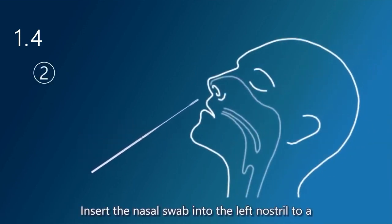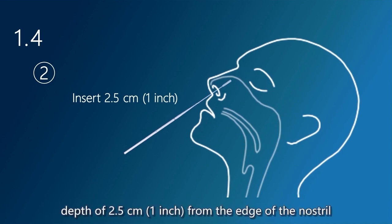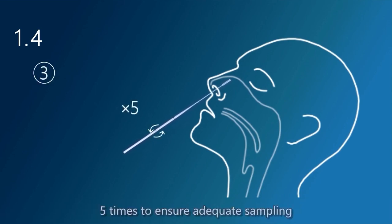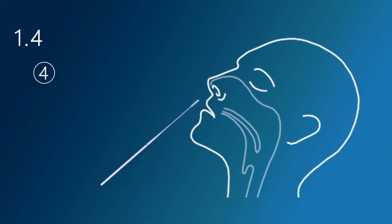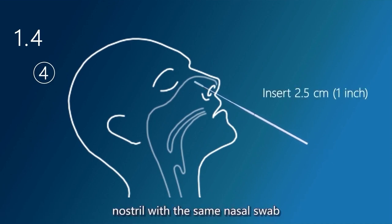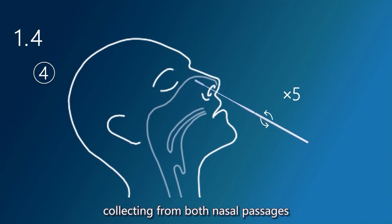Insert the nasal swab into the left nostril to a depth of 2.5 centimeters (one inch) from the edge of the nostril. Rotate the nasal swab on the nostril wall mucous membrane five times to ensure adequate sampling. Repeat the process in the right nostril with the same nasal swab, collecting from both nasal passages to ensure an adequate sample.